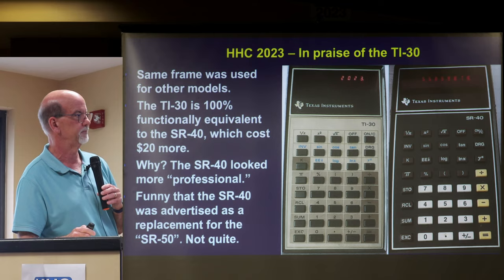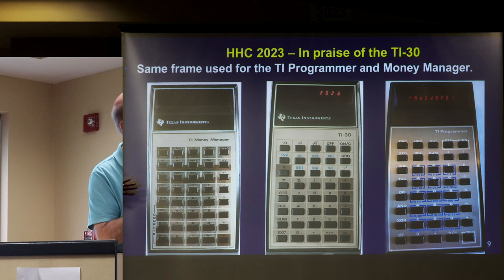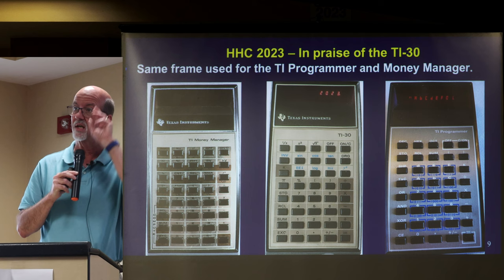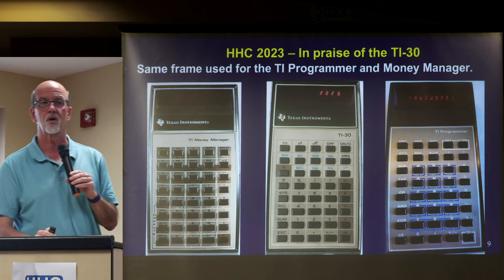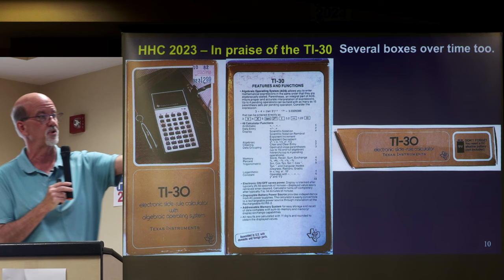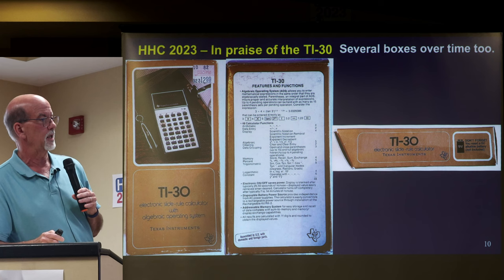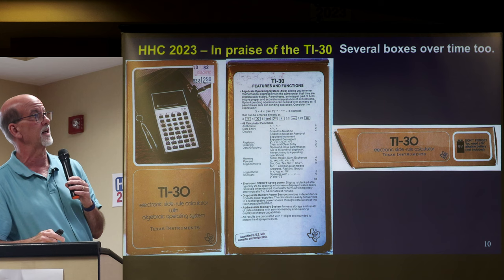The same frame was used for a lot of other models — the TI Money Manager, the cheaper financial machine, and the TI Programmer. On the prize table here, if you choose this one you've got to take them both: a TI-30 in the box and a TI Programmer with the manual, courtesy of Scott Reynolds. Here's a picture of the box — several boxes over time. It had this unique curved angle on the top part of the box, with all the features and specifications on the back.